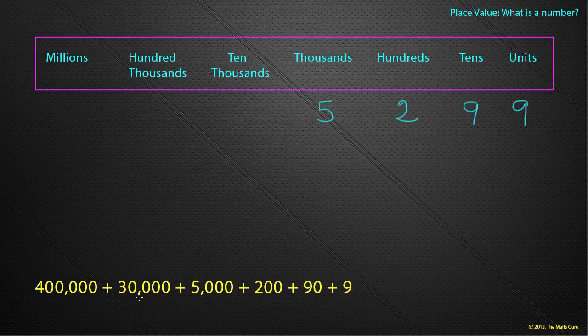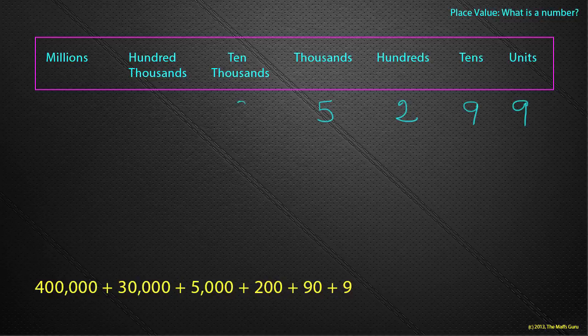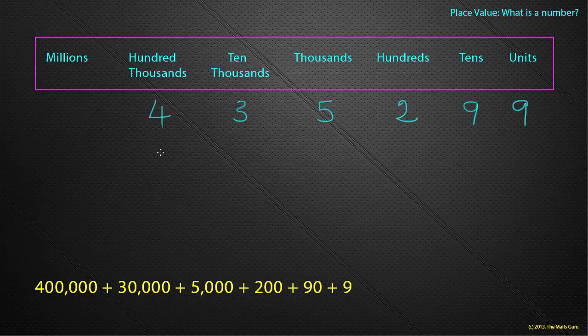Two hundred is two hundreds. Five thousand must be five thousands. Thirty thousand must be three lots of ten thousand. And four hundred thousand must be four lots of a hundred thousand. And lo and behold, there's my number.